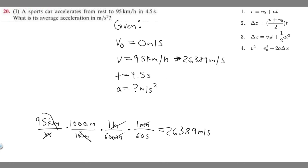All we got to do is plug everything in. So v, which is 26.389, equals v₀, which is zero, plus a, which we're trying to find, times t, which is 4.5. So it's just going to be 26.389 equals 4.5a.